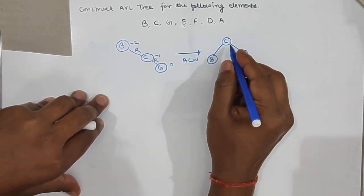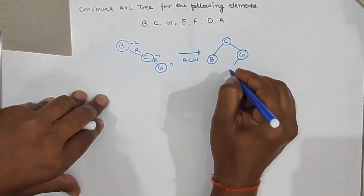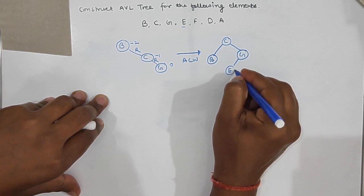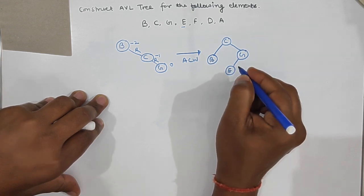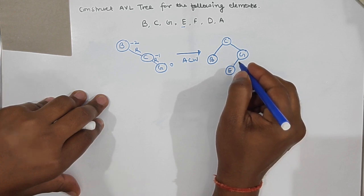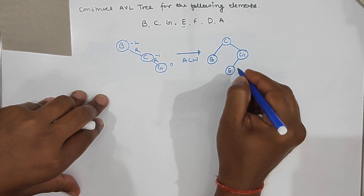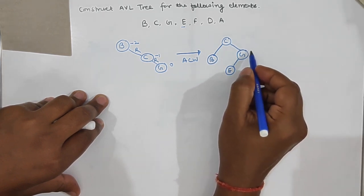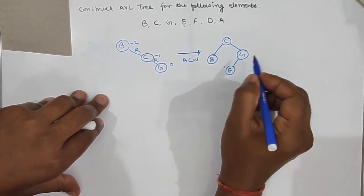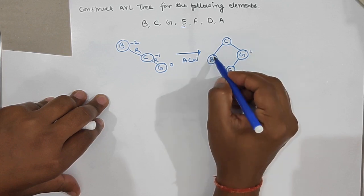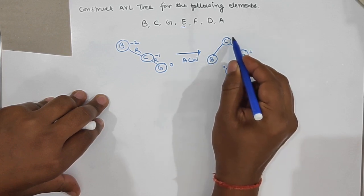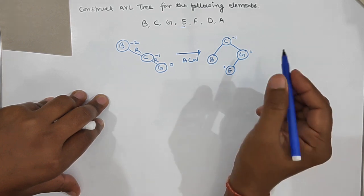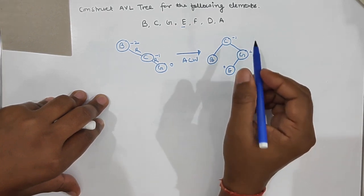We insert e. E is greater than c and less than g, so e is inserted here. We check the balance factor: 0, then 1, here it is 0, here it is 1, here it is 1, and here it is 1 minus 2, which means -1. The next node to insert is f.